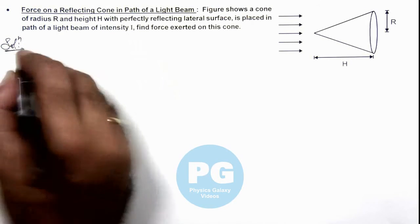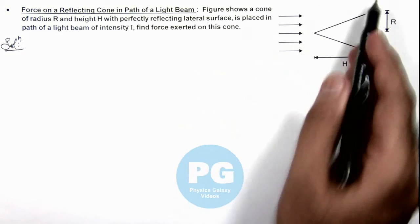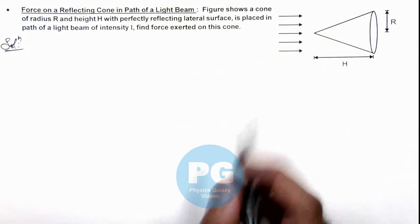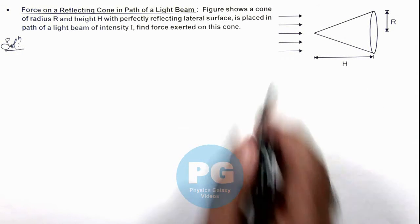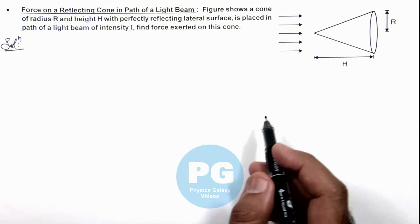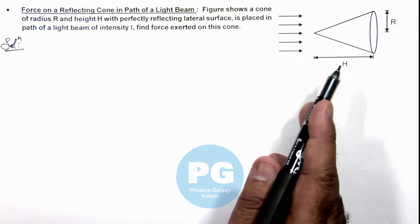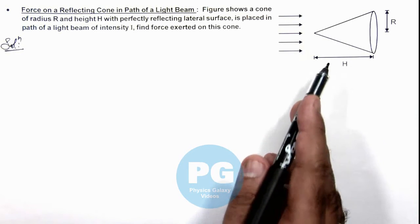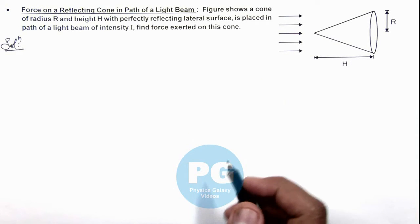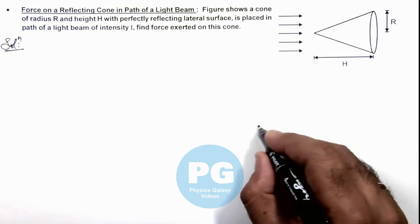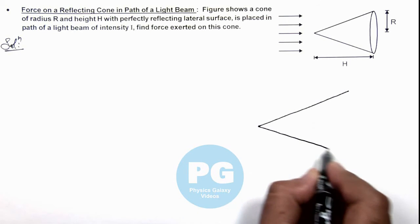In this solution, we know that after reflection the light rays are deviated in different directions which are falling onto it. To calculate the force acting on it, we need to find the momentum imparted by the light beam onto this cone, for which we redraw the figure and analyze it in detail.